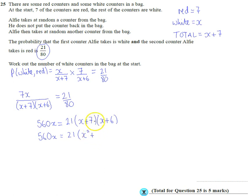X times X is X squared. I'm going to get 7X and 6X, which is 13X. And 6 times 7, 7 times 6 is 42.